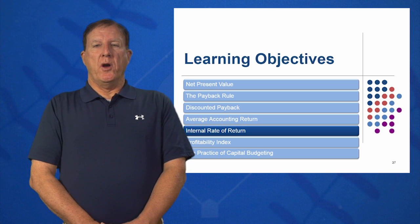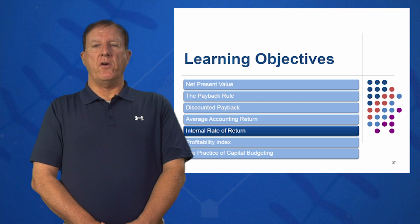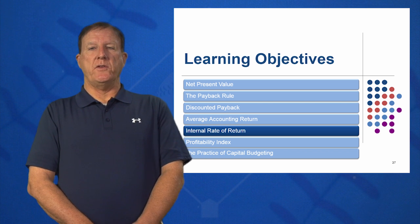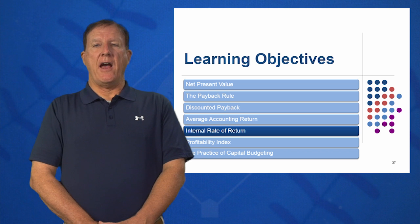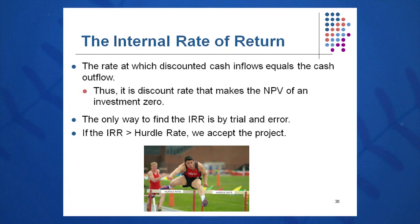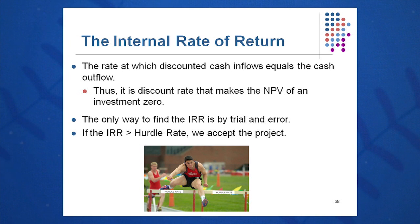Our fifth learning objective is a very important one: internal rate of return, used heavily in industry. We're looking for the rate at which my NPV equals zero — the rate at which my discounted cash inflows equals my cash outflow. This is the discount rate that makes the NPV of an investment zero.